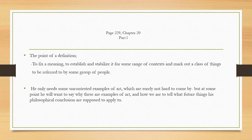Next, I'm going to discuss Chapter 20, page 229, Part 1. It states: 'It should not be necessary to argue that we have need for a definition of art, but since this has been vigorously denied, some argument must be given. The point of a definition is to fix a meaning, to establish and stabilize it for some range of context, and to mark out a class of things to be referred to by some group of people. One would think the philosopher of art could use a definition, since he should be curious to know what he is philosophizing about.'